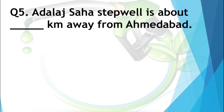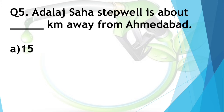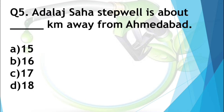Question number five: Salta Saha Step Bell is about dash kilometers away from Ahmedabad. Options are 15, 16, 17, and 18. If you have studied the chapter, this is given at the start of the chapter — the answer is 18.